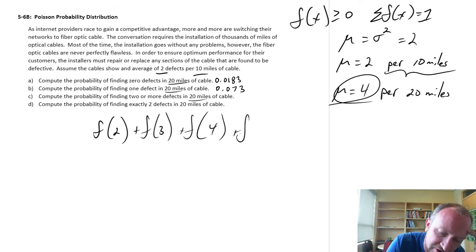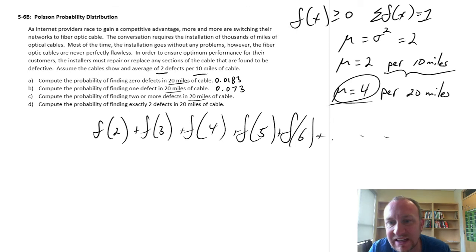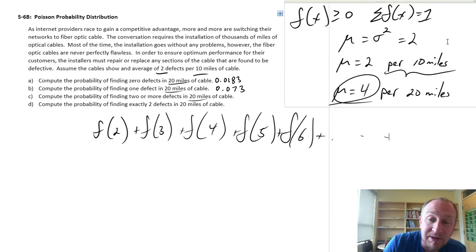So f of 4, 5, 6, and on and on and on. Now those probabilities are going to diminish to zero, but it might take a few before we get there. So calculating two or more might be a challenge for us, might be time consuming.